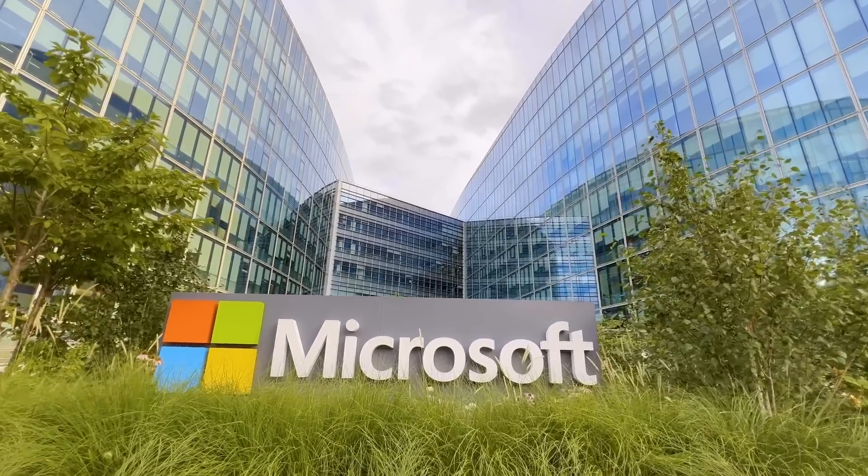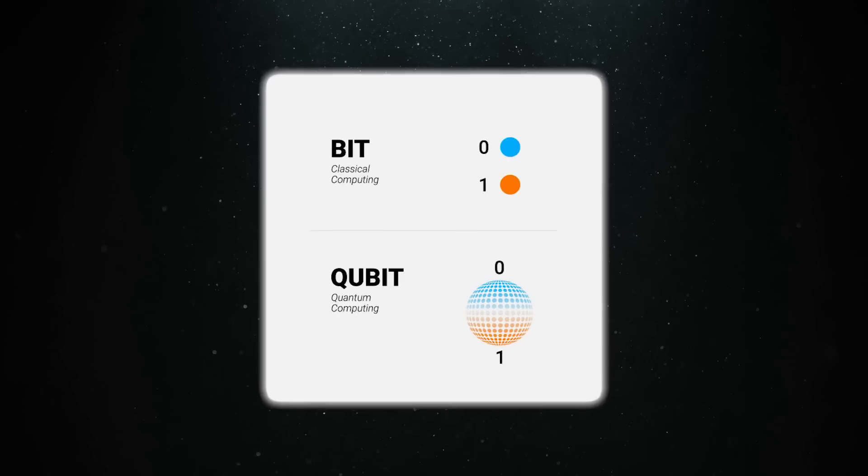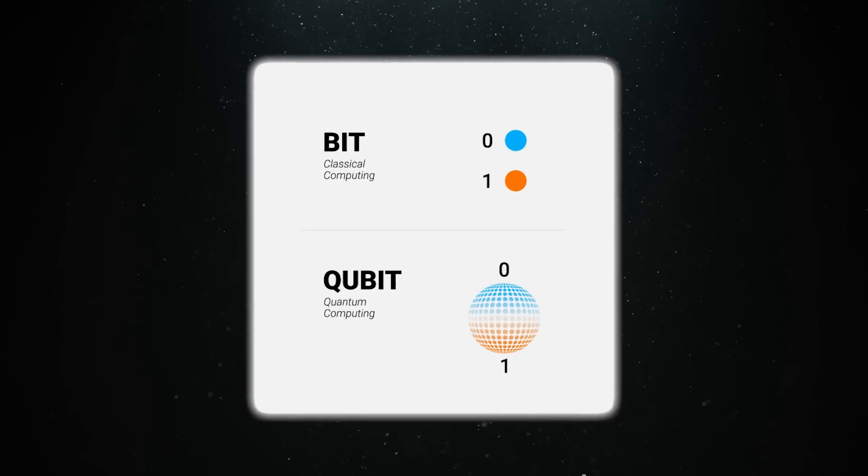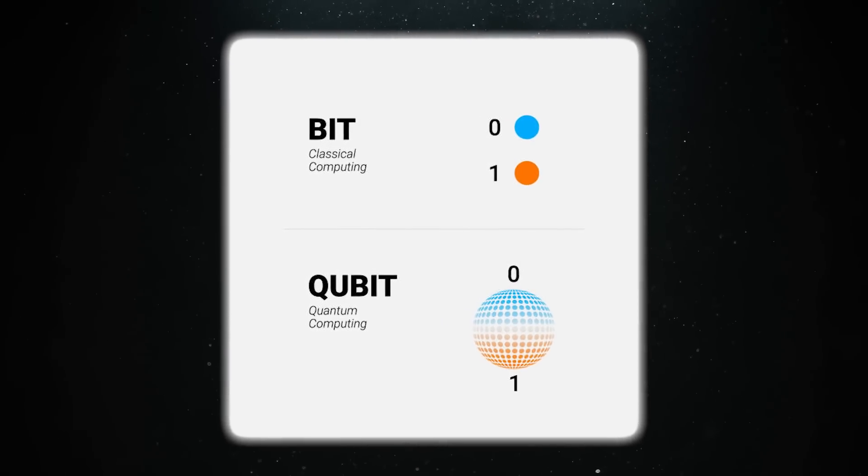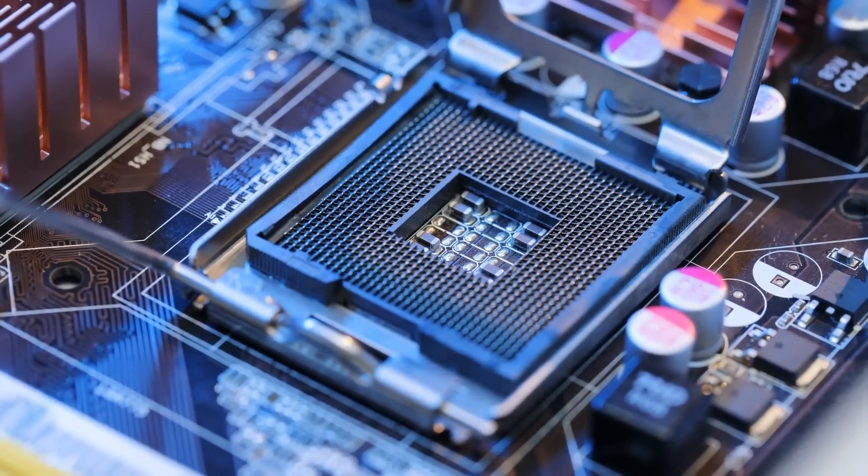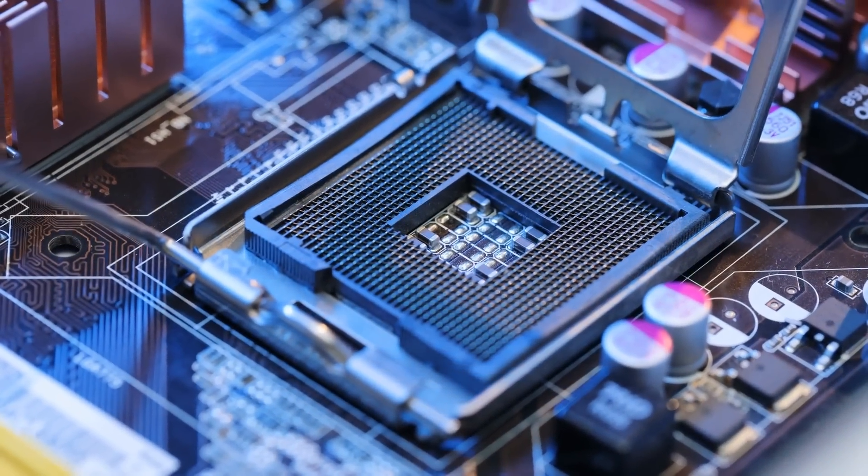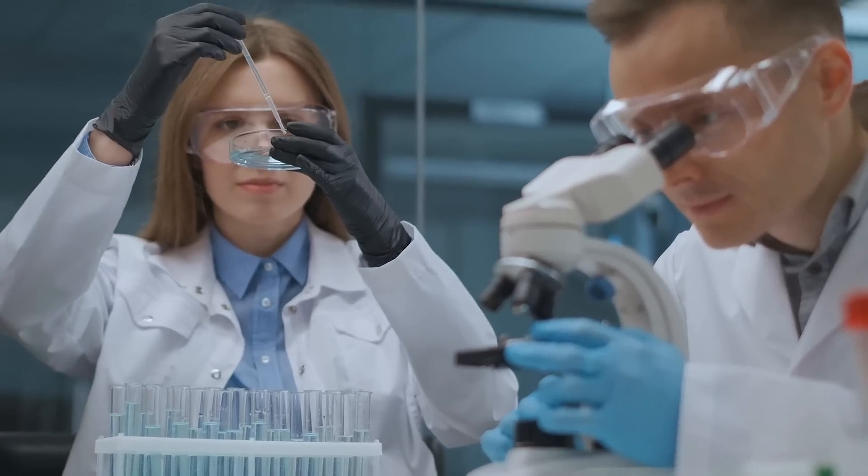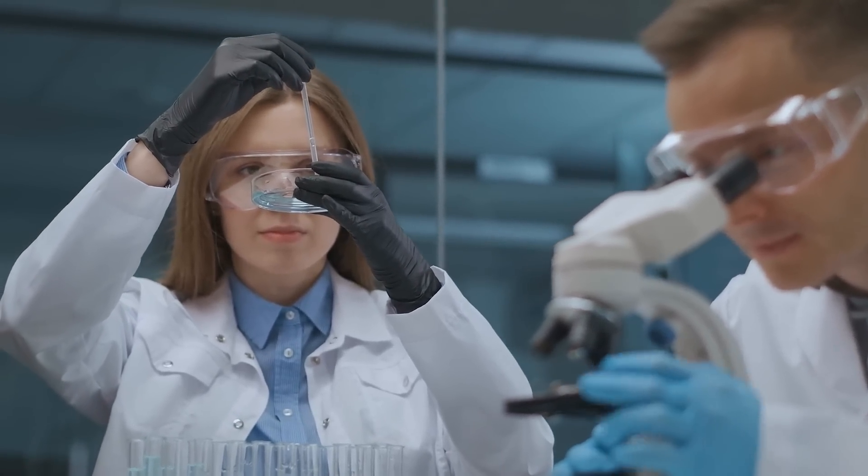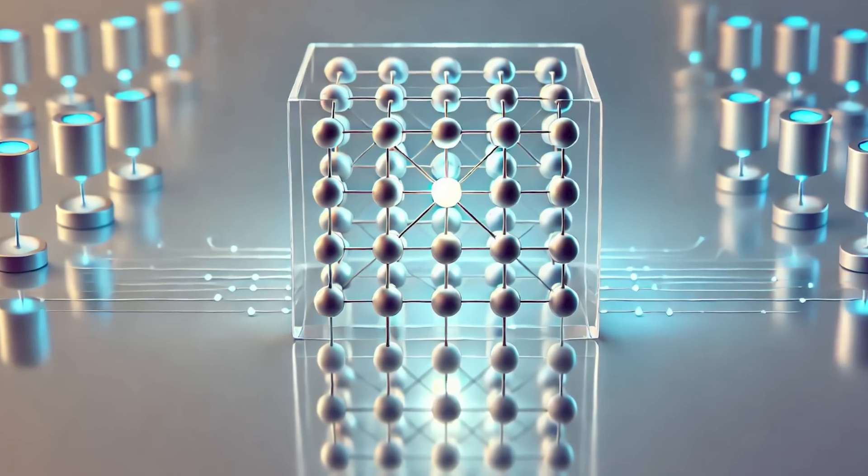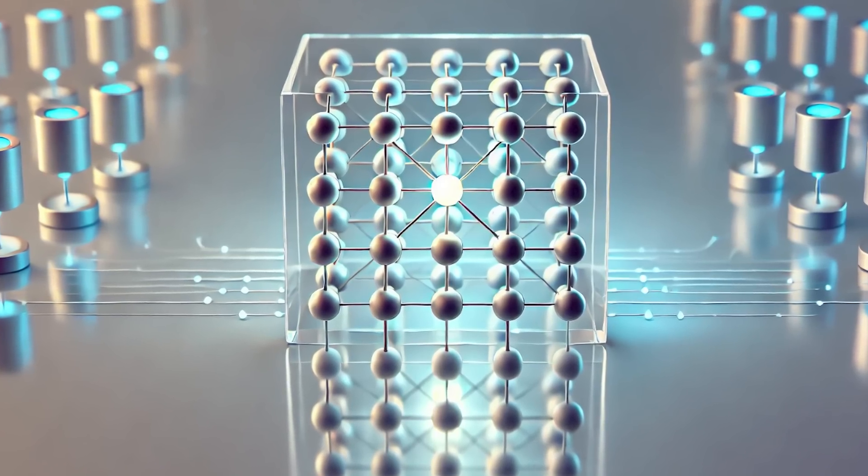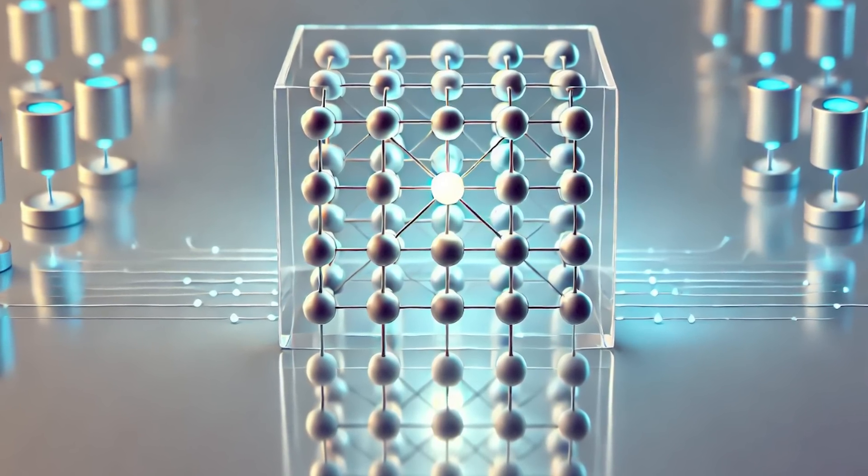Microsoft and Quantinuum just announced a significant breakthrough, the creation of a logical qubit, a quantum bit that's far more stable and reliable than its predecessors. This development could mark a turning point in the race to build practical quantum computers, with profound implications for fields like material science, drug discovery, and artificial intelligence. Let's dive into exactly what a logical qubit is and why it is such a game-changer.